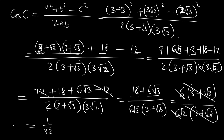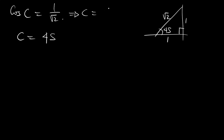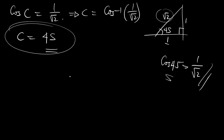We are left with 1 over root 2. So cos C equals 1 over root 2. From a 45-45-90 triangle, we know cos 45° equals 1 over root 2 (adjacent over hypotenuse). Therefore C equals cos inverse of 1 over root 2, which is 45°. So the smallest angle C is 45 degrees.